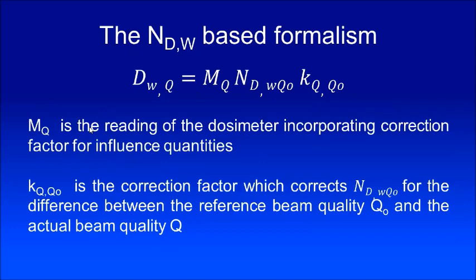M_Q is the reading of the dosimeter with all corrections incorporated for the influence quantities. K_Q,Q0 corrects the N_D,w,Q0 — which was obtained for Cobalt-60 as the reference beam quality Q0 — to the actual user beam quality Q. So the only conversion factor required here is K_Q,Q0.